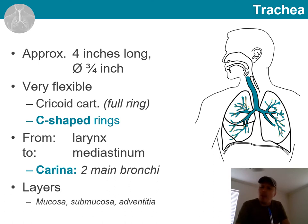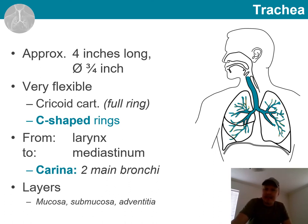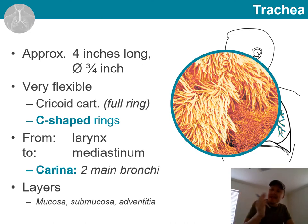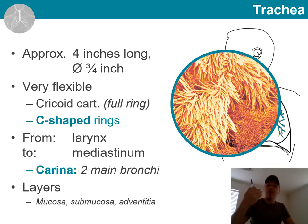The wall of the trachea is covered with these little hair-like structures known as cilia. They play an important role sweeping any impurities away from there towards the throat.